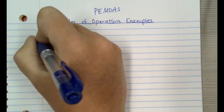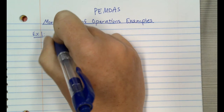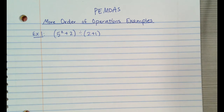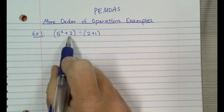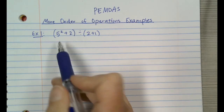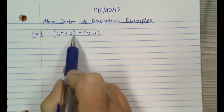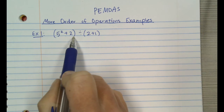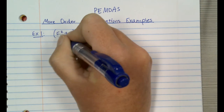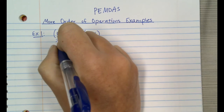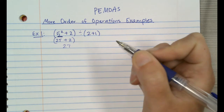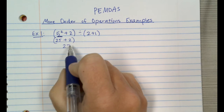Let's start off with one that's not terribly hard. It's going to be (5² + 2) ÷ (2 + 1). We know that we look at our parentheses first. In this case we have two different sets of parentheses. Technically you can do them at the same time, but normally we just work from left to right. In this first set of parentheses we have an exponent and an addition — exponents happen first. So I'm going to start with simplifying 5 squared, which is 25. Then 25 plus 2 is 27.